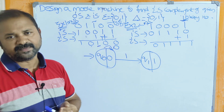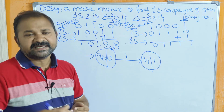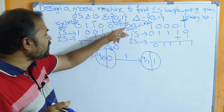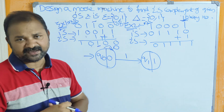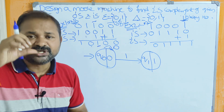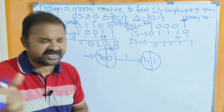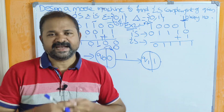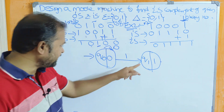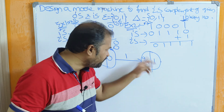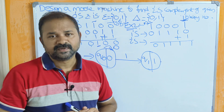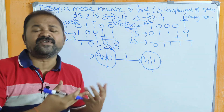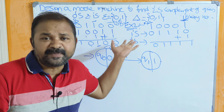A Moore machine is essentially a DFA, so each state must consume all symbols present in the alphabet. The input alphabet contains two symbols: 0 and 1. So we must use 0 and 1 on each and every state. On q0 we have used 0 and 1. Now let us focus on state q1. The output of q1 is 1, when the output is 1 if the input is 0.